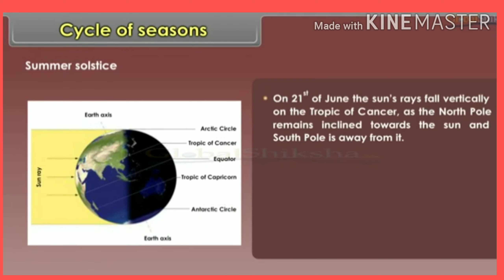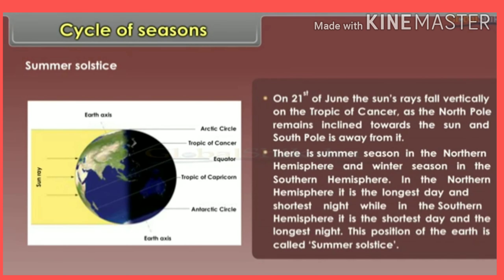Summer solstice: On 21st June, the sun's rays fall vertically on the Tropic of Cancer as the north pole remains inclined towards the sun and the south pole is away from it. There is summer season in the northern hemisphere and winter season in the southern hemisphere. In the northern hemisphere, it is the longest day and shortest night, while in the southern hemisphere it is the shortest day and the longest night. This position of the earth is called summer solstice.